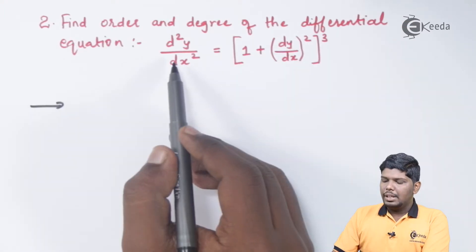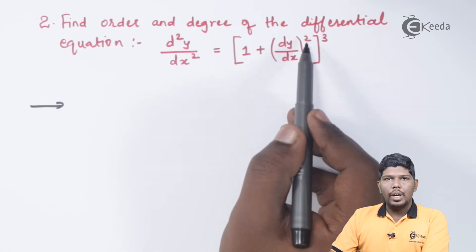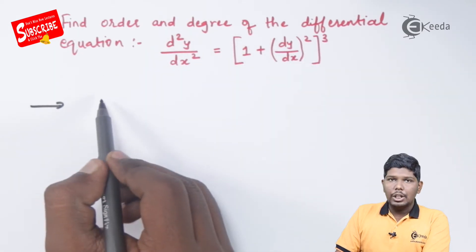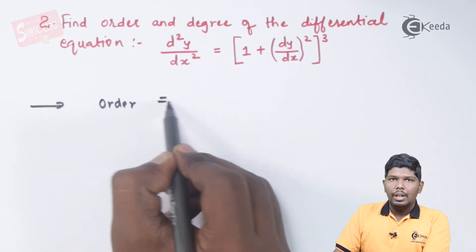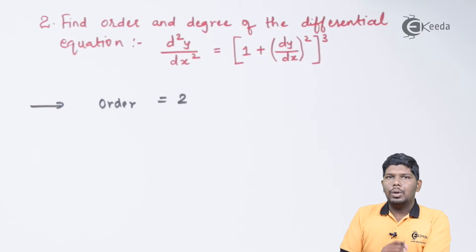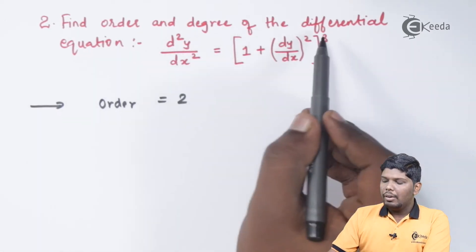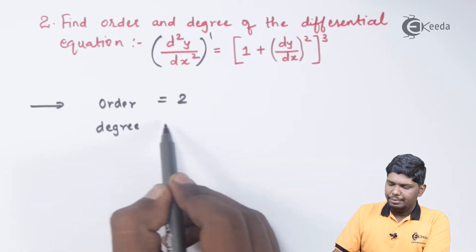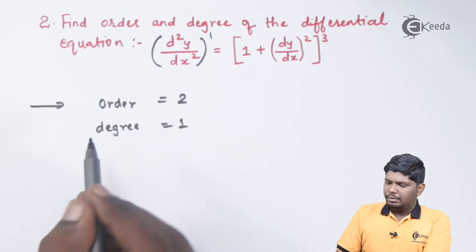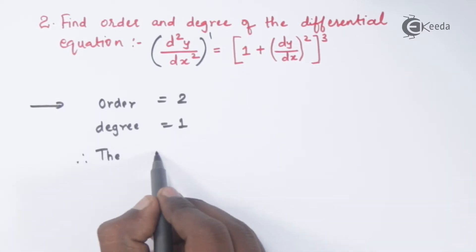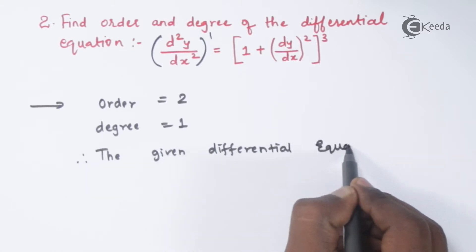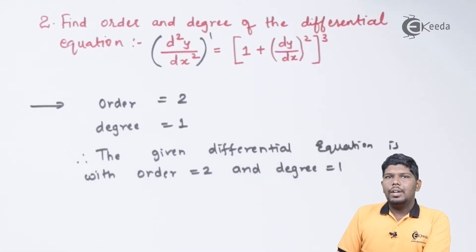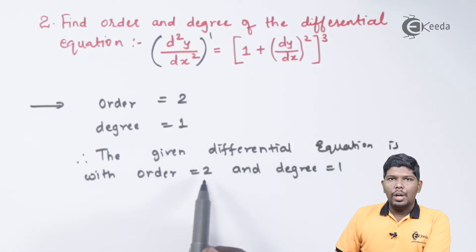In the second example, we have the differential equation d²y/dx² = (1 + (dy/dx)²)³. This is a second order derivative and dy/dx is the first order derivative, so the highest order is equal to 2. We don't have any fractional power, so the power of d²y/dx² is 1, and the degree is equal to 1. Therefore, the given differential equation has order 2 and degree 1.